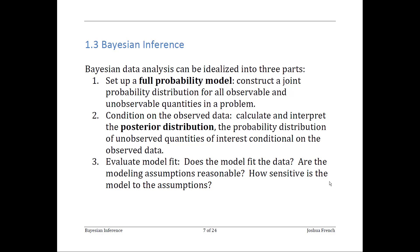Step number one is to set up a full probability model. Practically speaking, this means you need to decide on a data generating process, or a likelihood function, and also describe your initial beliefs about the unobservable quantities in your model — in other words, construct a prior distribution.